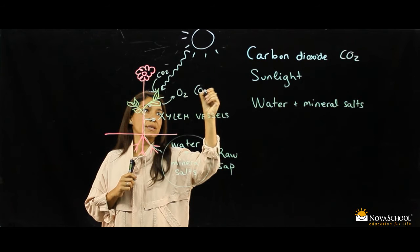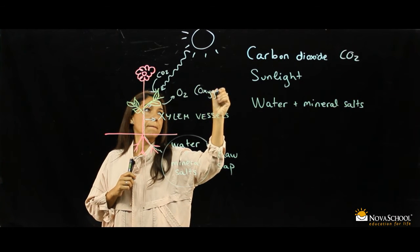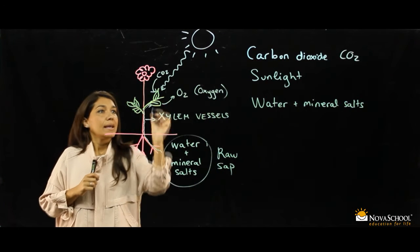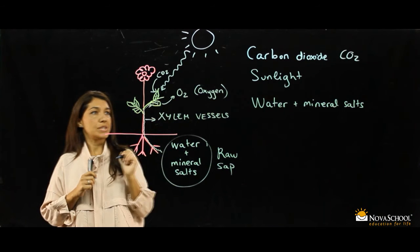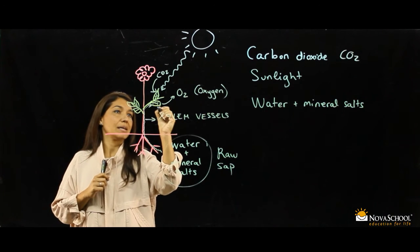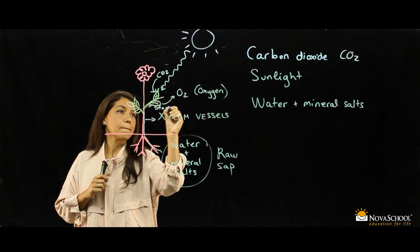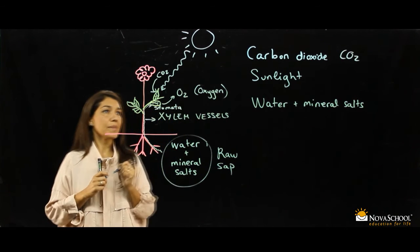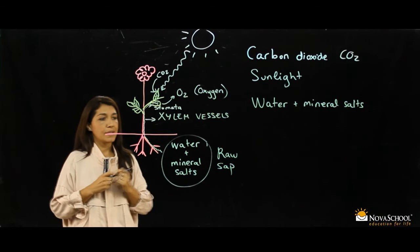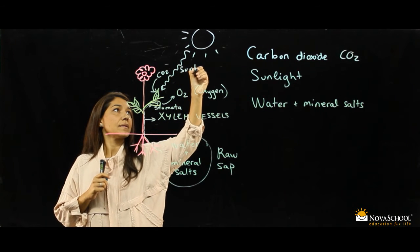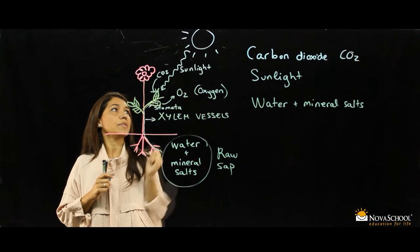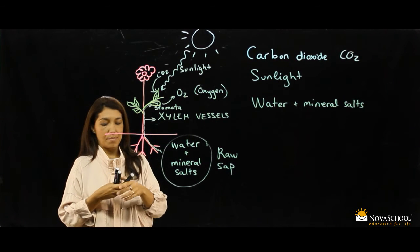It is possible thanks to very tiny holes which are in the leaves called stomata. Then, the raw sap, thanks to the energy from the sun and the carbon dioxide, turns into elaborated sap.